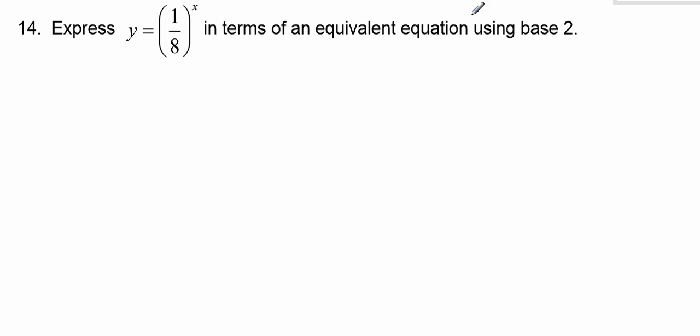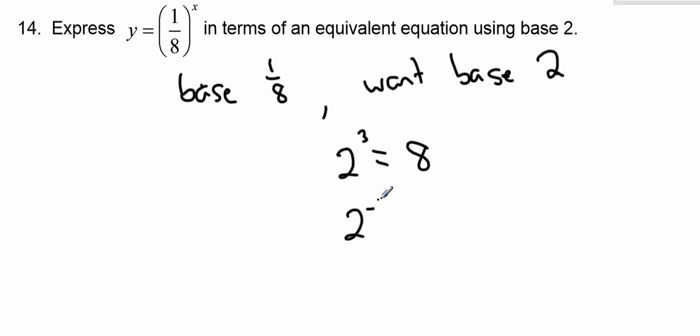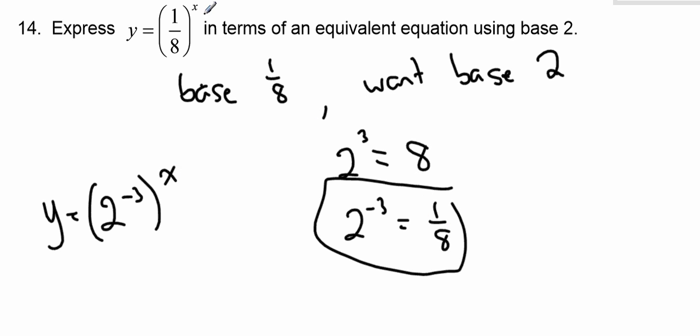Express this in terms of an equivalent equation using base 2. So right now the base is 1 over 8, and we want a base of 2. So first of all, let's talk about the connection between base 2 and base 1 over 8. So we know that 2 to the 3 equals 8, and therefore 2 to the negative 3 is 1 over 8. So there's the connection between the current base and the base we want. So now I can write this as y equals 2 to the negative 3 to the x. So again, I had a base of 1 over 8. I replaced it with the base of 2. Now I'm just going to clean it up.